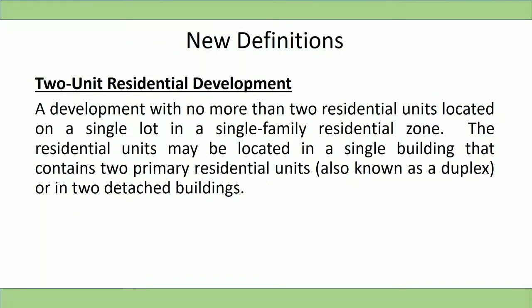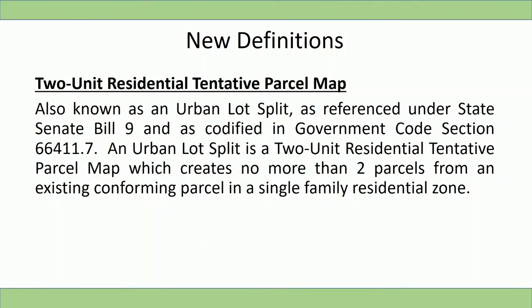Two new terms were created for the urgency ordinance. The first is a two-unit residential development, defined as a development with no more than two residential units located on a single lot in a single-family residential zone. The units may be in a single building containing two primary units — also known as a duplex — or in two detached buildings. A two-unit residential tentative parcel map is also called an urban lot split under the new SB9 law, and the two terms are used interchangeably. It creates no more than two parcels from an existing conforming parcel in a single-family residential zone.